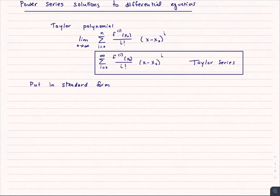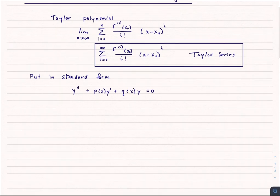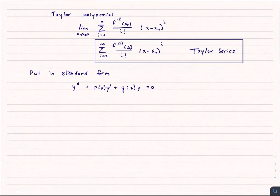The first thing we always need to do is put our equation in standard form. That is, the coefficient in front of the highest derivative has to be equal to 1. So let's look at this. If we have an equation in this form, what we need to do is find out what kind of points we have. Do we have ordinary points or singular points? What do I mean by that?